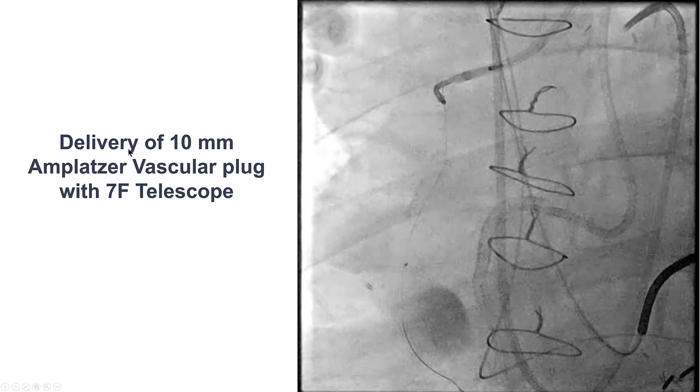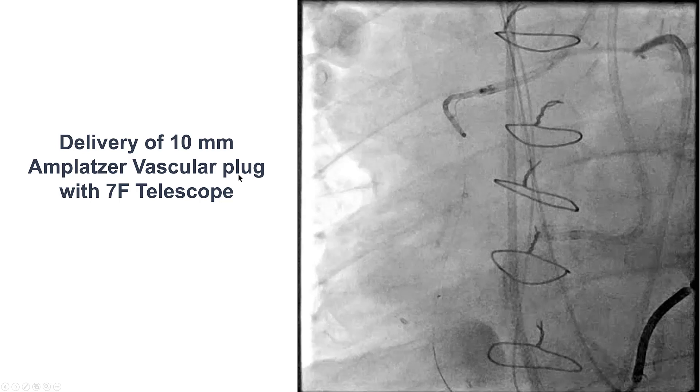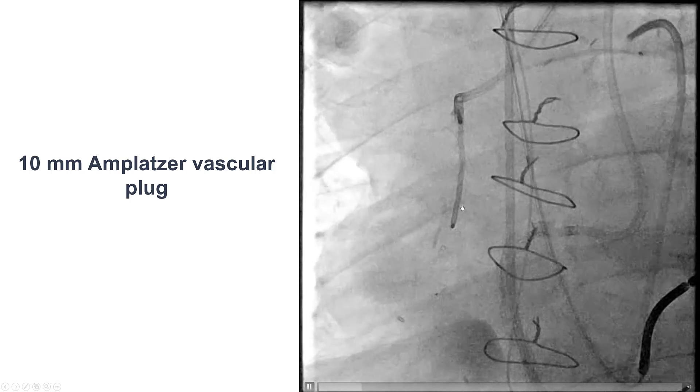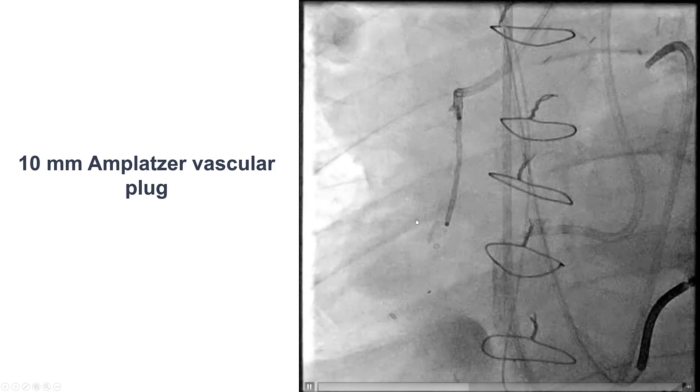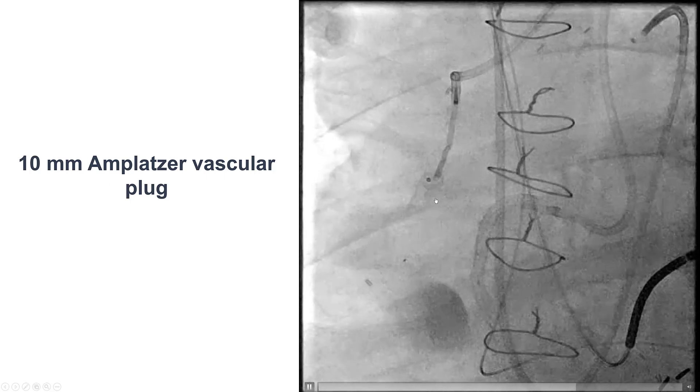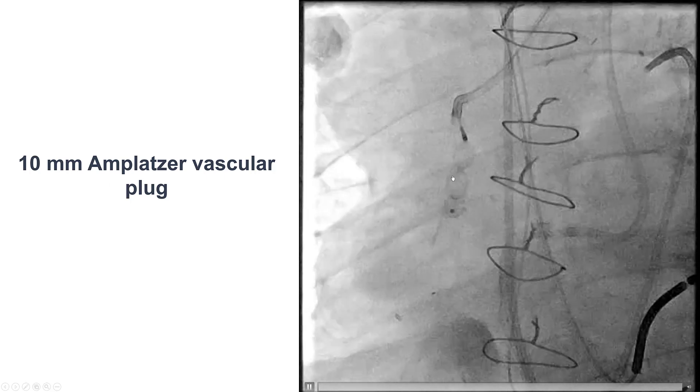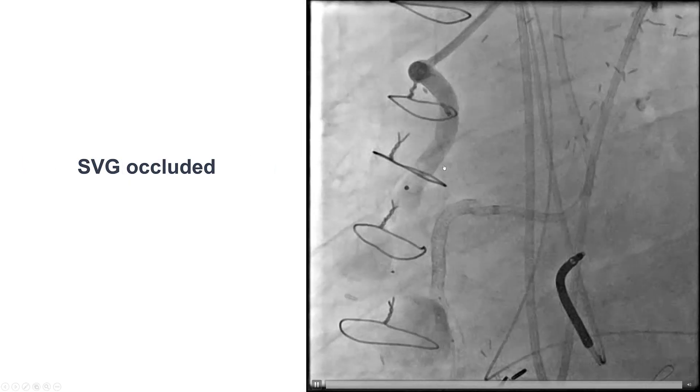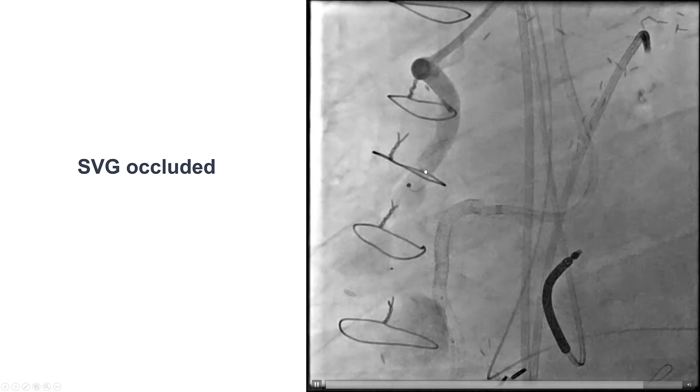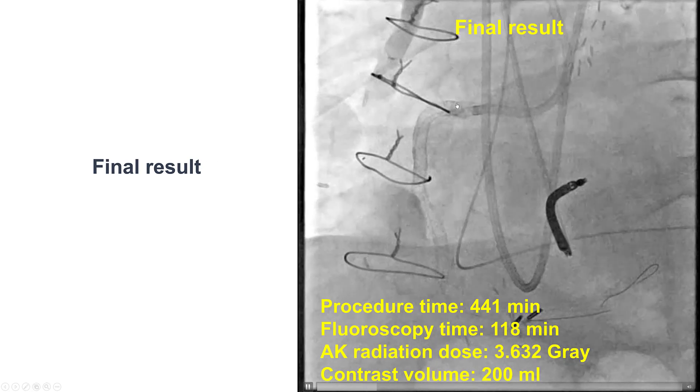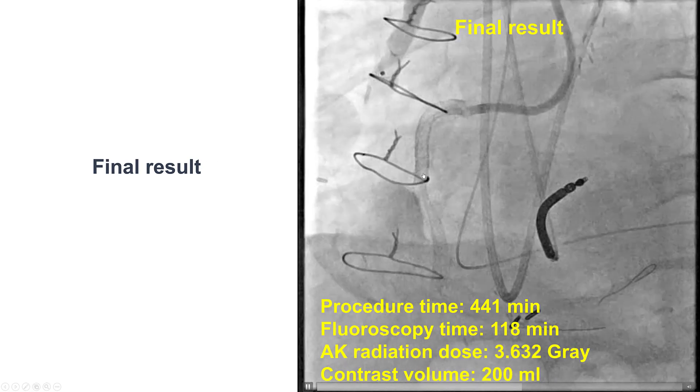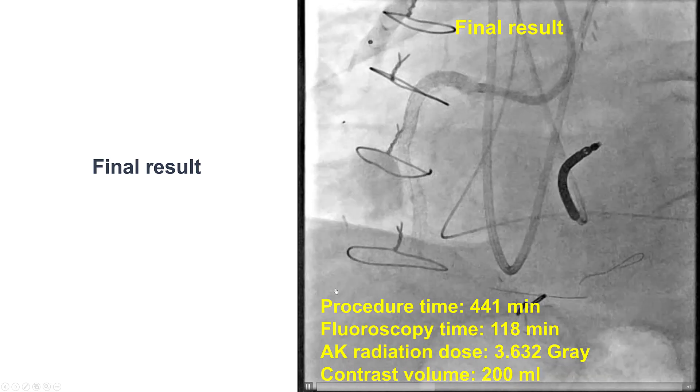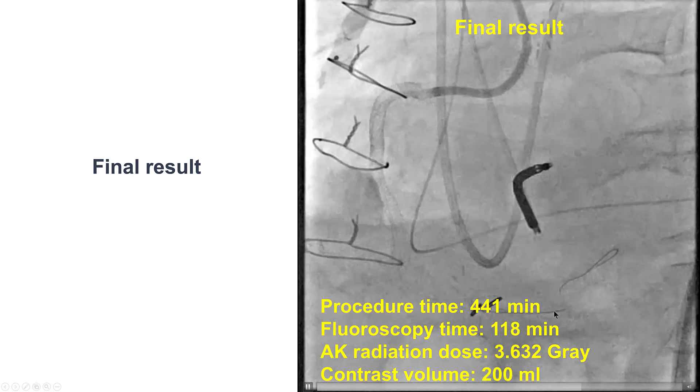We then proceeded with delivering a 10-millimeter Amplatzer vascular plug through a 7-French telescope guide extension. Here it is. And then that was unsheathed, essentially deploying the Amplatzer vascular plug into the proximal portion of the aneurysmal saphenous vein graft to the right coronary artery. And that led to successful occlusion of the aneurysmal saphenous vein graft. This was the final result. We do have good flow through the native right coronary artery. There is some retrograde flow into the aneurysmal SVG, but there is also good antegrade flow to the distal right coronary artery.